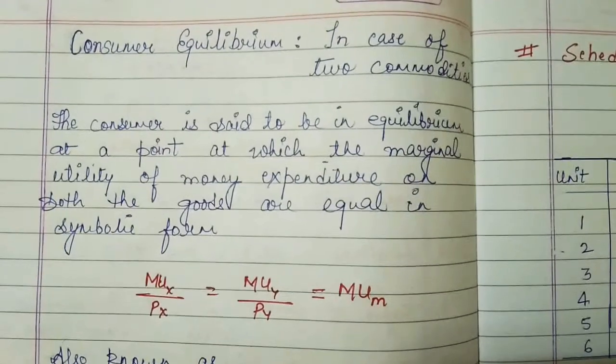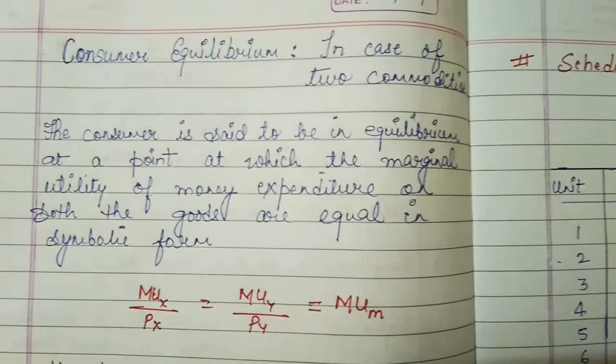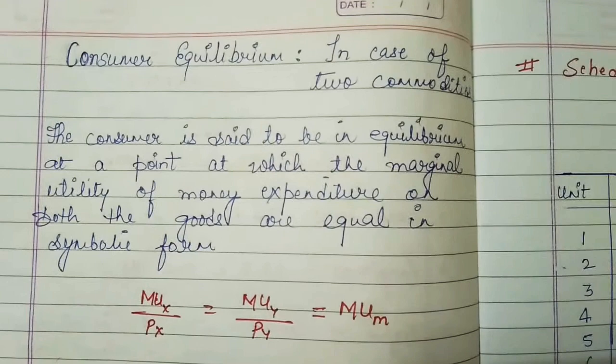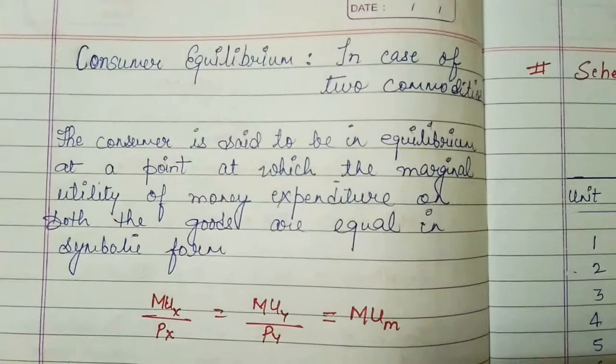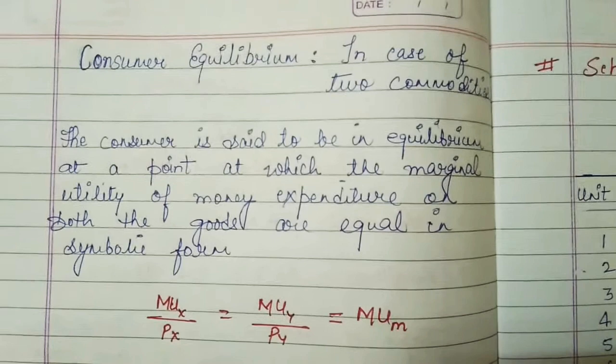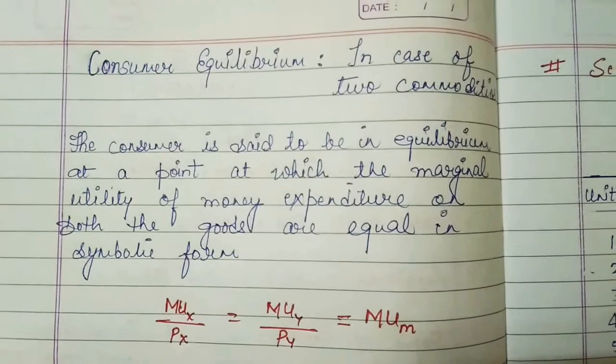Good morning everyone. In my last video lecture you studied consumer equilibrium as well as consumer equilibrium in case of a single commodity. This time I am here with consumer equilibrium in case of two commodities — when a consumer is in equilibrium when he purchases two commodities. We are going to see this in this video lecture.